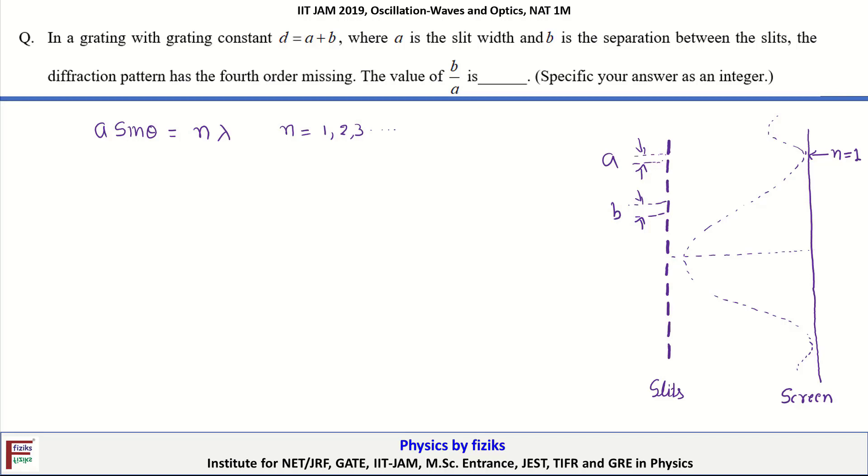We also have n number of slits here. When the light is passing through this n number of slits, it's going to produce an interference pattern. This interference pattern will lie inside this diffraction envelope, and the maxima of the interference is going to modify according to the intensity given by the diffraction pattern.